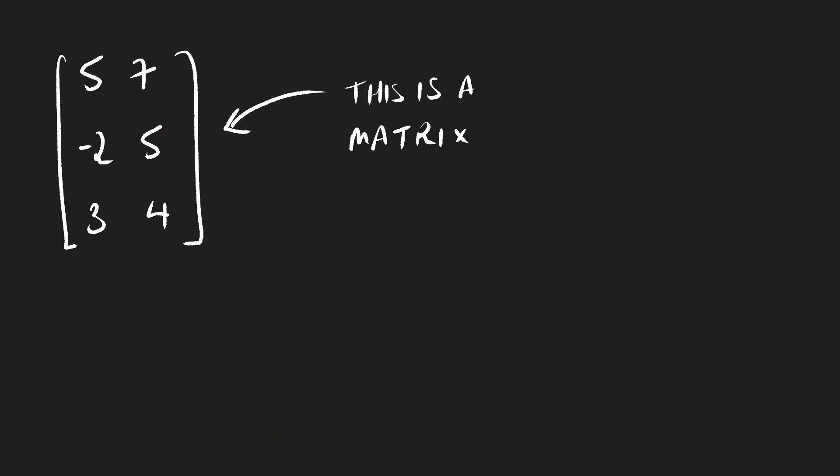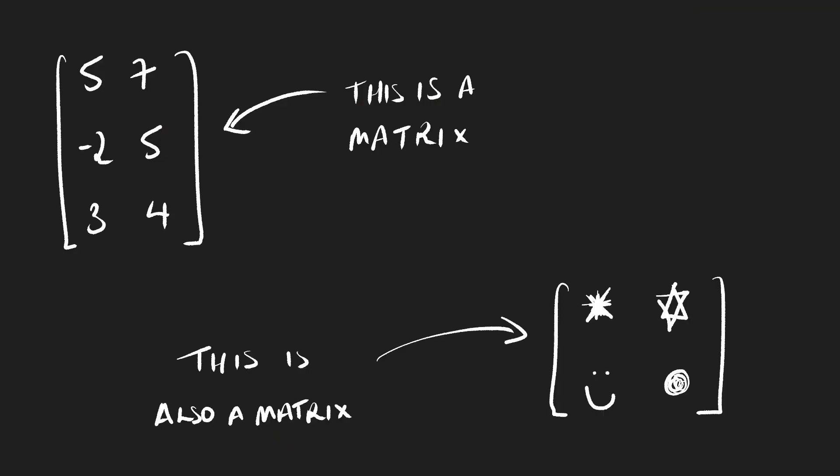So what is a matrix? Well, it's a way of storing information — usually numerical — in a rectangular fashion that will either simplify a problem or, in other situations, actually shed light on the problem from a different angle.